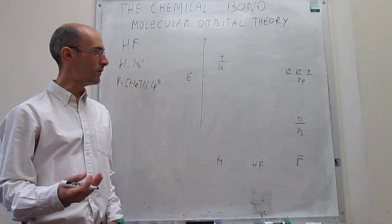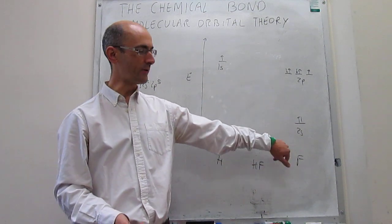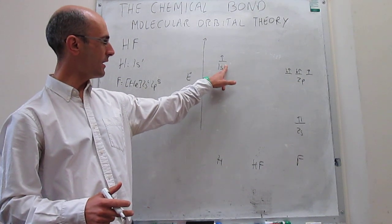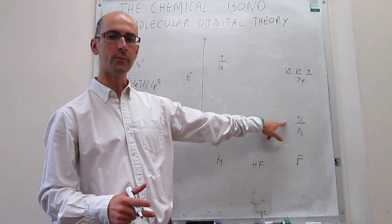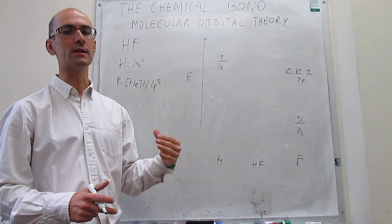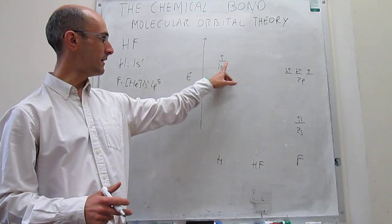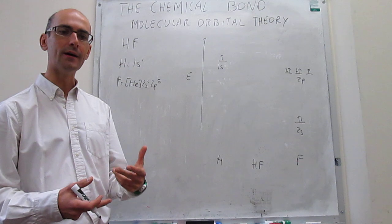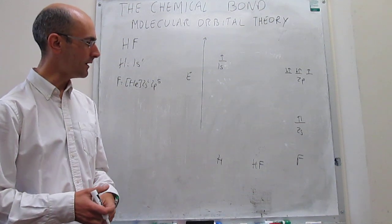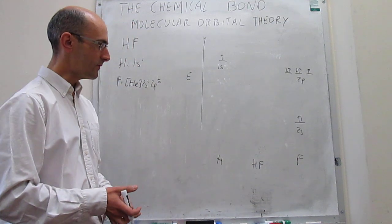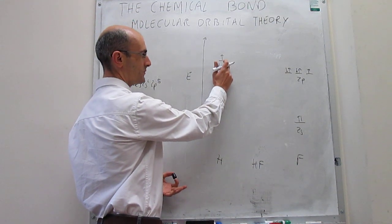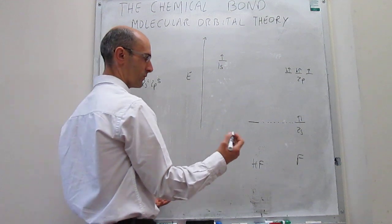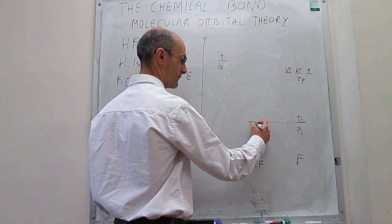Now we have to think about how the hydrogen orbital and the fluorine orbitals mix to generate molecular orbitals. It's pretty clear that the 1s orbital of hydrogen is much higher in energy than the 2s orbital of fluorine. They're so different in energy that mixing will not take place — for combinations to occur, the energies have to be reasonably similar. So the 2s orbital goes to the molecular orbital diagram unchanged, and it still has two electrons.